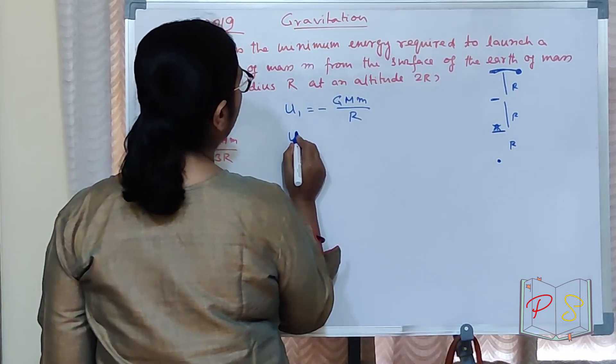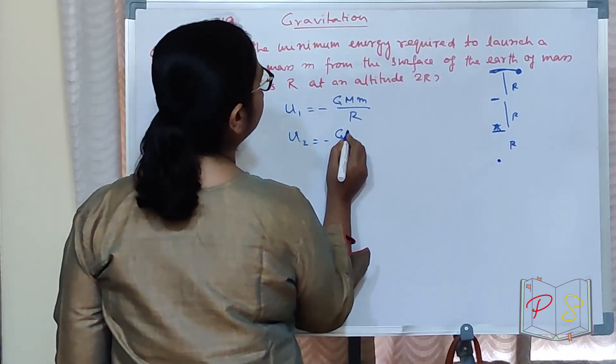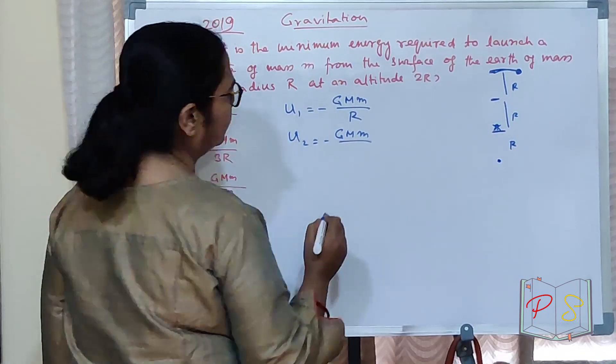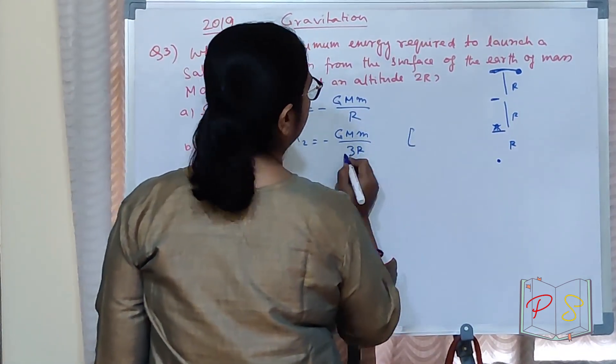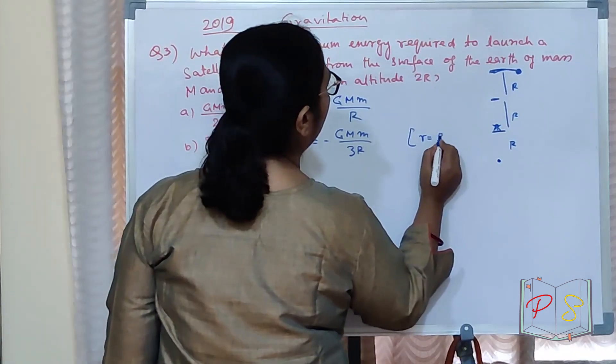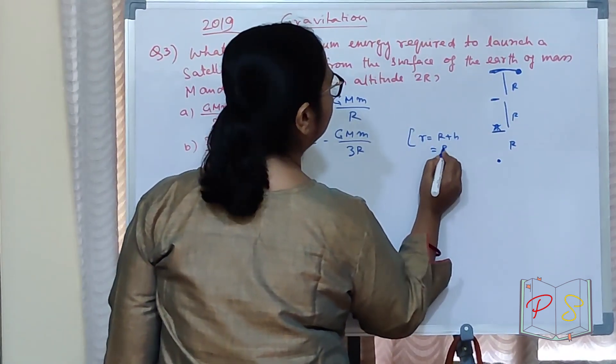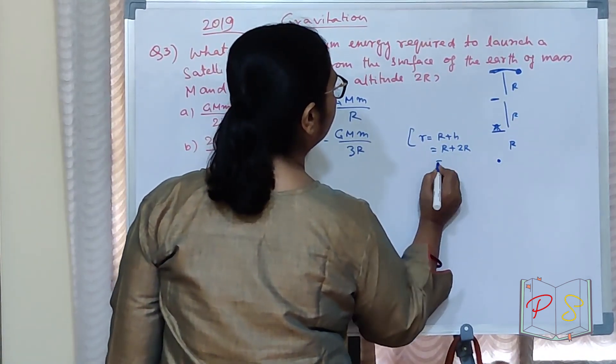What is the minimum energy required to launch a satellite? R equal to R plus H equal to R plus 2R equal to 3R.